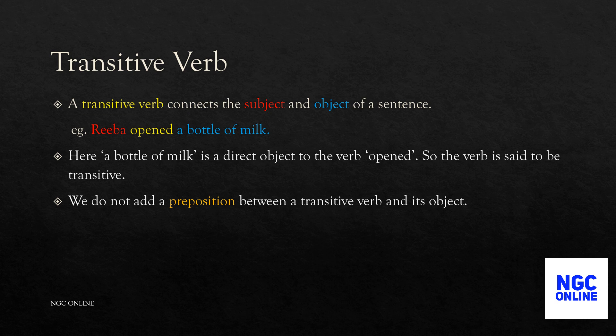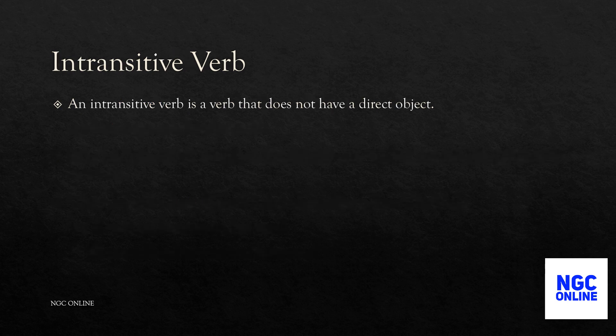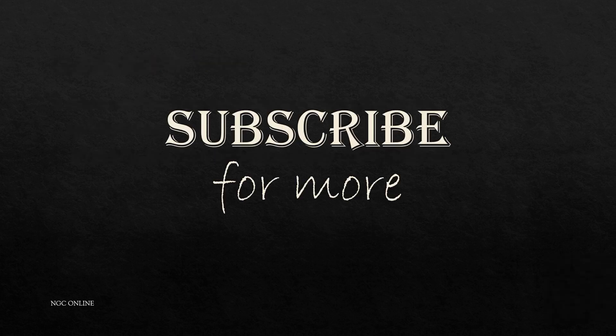We do not add a preposition between a transitive verb and its object. For example, 'He wrote for a letter to me' is incorrect usage; the correct usage is 'He wrote a letter to me.' An intransitive verb is a verb that does not have a direct object. For example, 'I am writing' — since there is no direct object here, the verb 'writing' is intransitive.